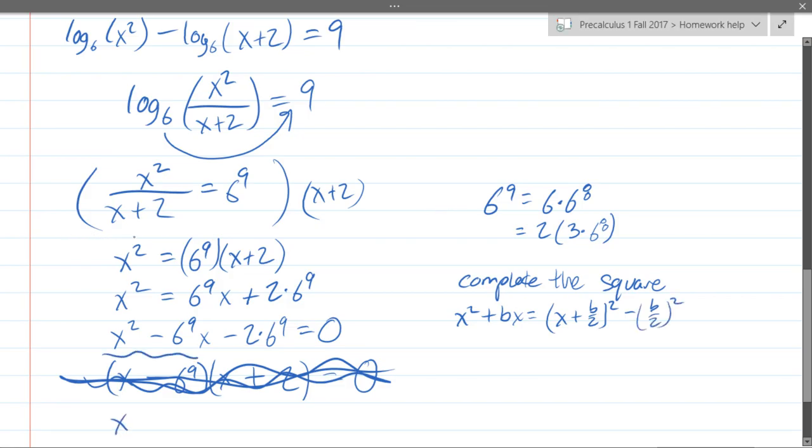Here we go. This is b right here. So what is b over 2 will be half of that, 3 times 6 to the 8th. So we have x minus 3 times 6 to the 8th squared minus b over 2, which again is 3 times 6 to the 8th squared. That just replaced these terms right here. We still have our constant term, 2 times 6 to the 9th equals 0.